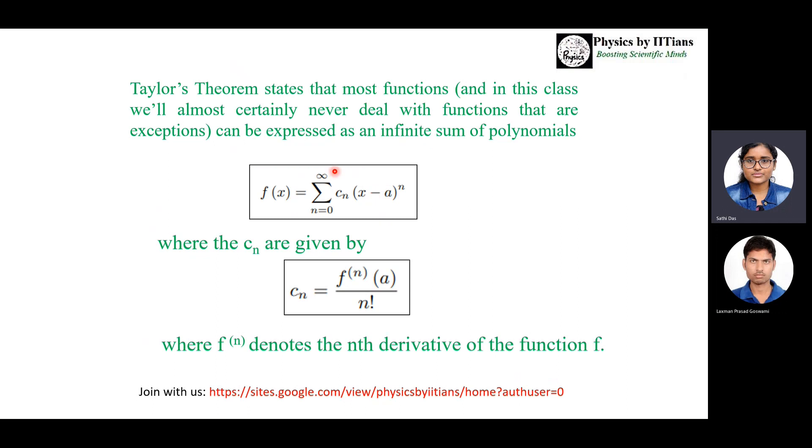Taylor's theorem states that most functions, not talking about all exceptions, but most functions can be expressed as an infinite sum of polynomials. That means a function f(x) can be written as f(x) = sum from n=0 to infinity of cn(x-a)^n, where the cn coefficients are given by cn = f^(n)(a)/n!.